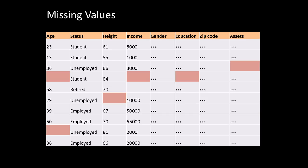Another problem with data is missing values. In this example I've colored all the missing values. You've got many rows with all attributes present, but in the third row assets are missing, the fourth row is missing age, income, education, and so on. What do you do with these missing values? When you apply a model, the model requires all the values to be present. If some values are not present, the model won't be able to use that particular case in any meaningful way — missing values is a problem.